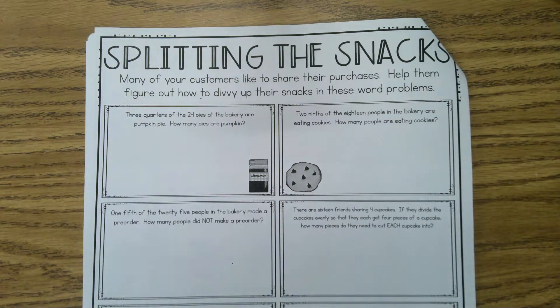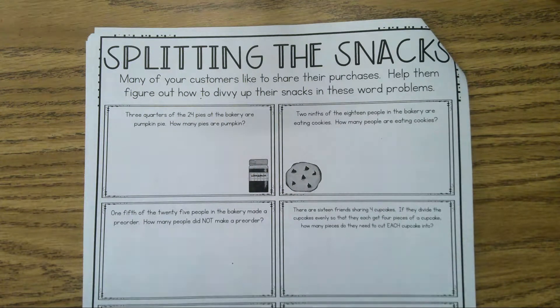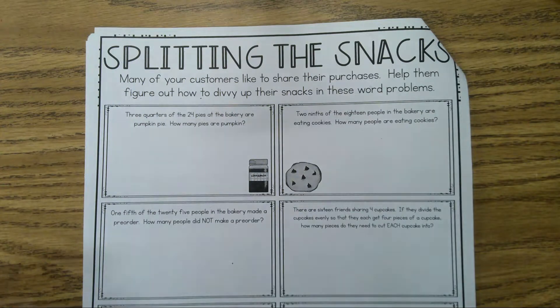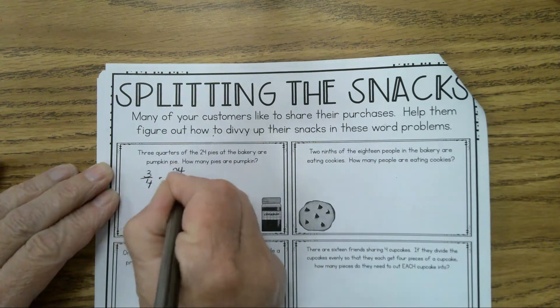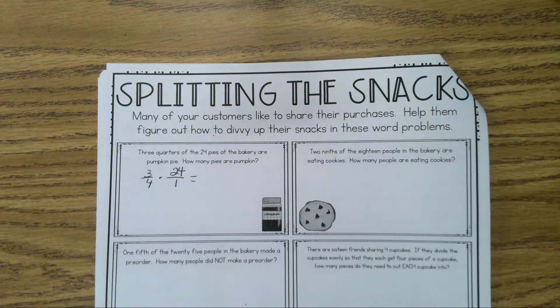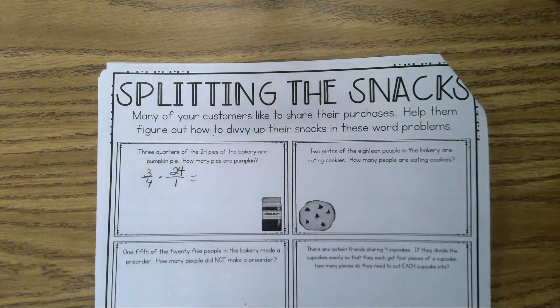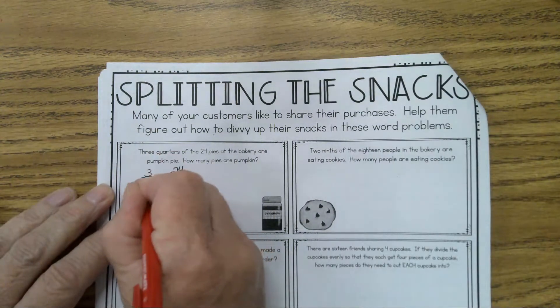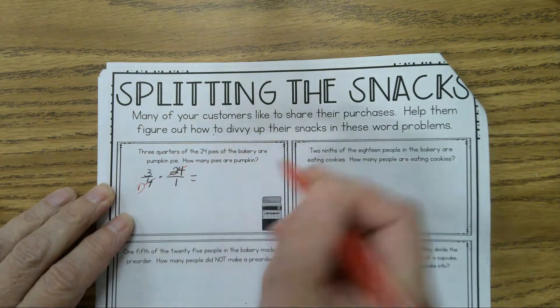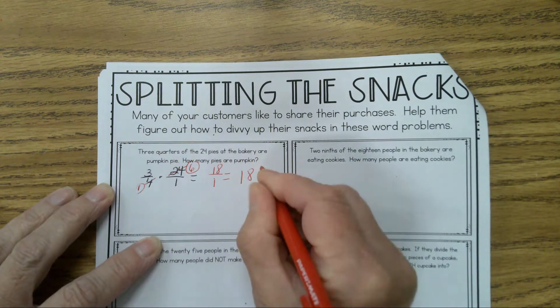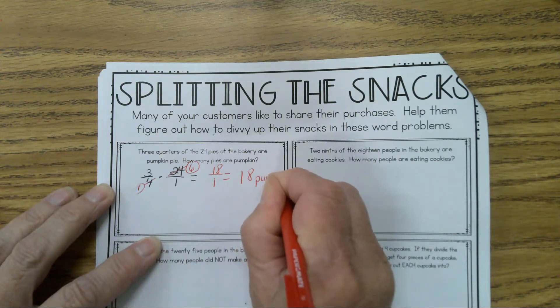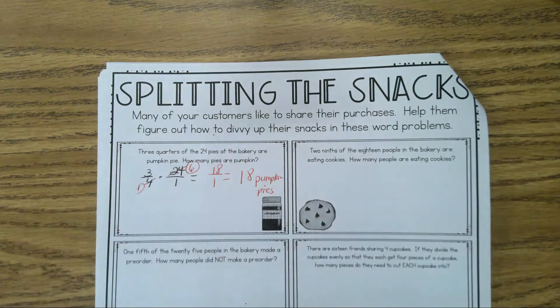It says many of your customers like to share their purchases. Help them figure out how to divvy, that's another word for split up, their snacks in these word problems. Carrington reads: three-fourths of 24 pumpkin pies. Of means to multiply, so you're going to take 3/4 times 24 over 1. Simplify before I multiply. 4 will divide 4 once and 4 divides 24 six times. 3 times 6 is 18, 1 times 1 is 1. The answer is 18 pumpkin pies.